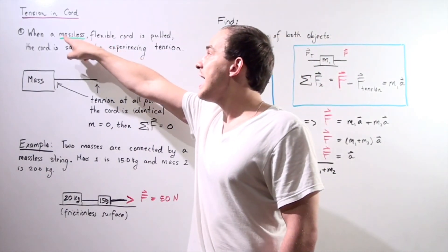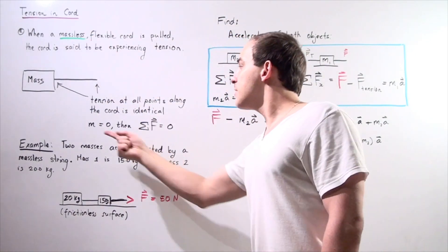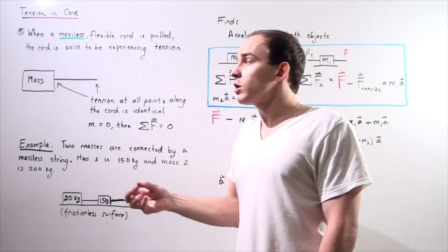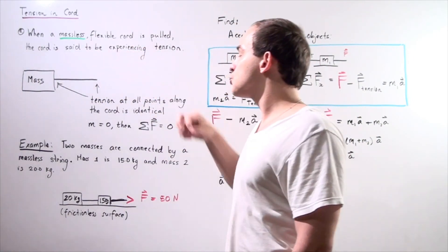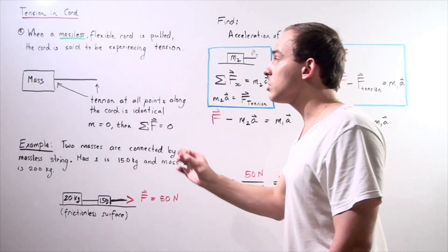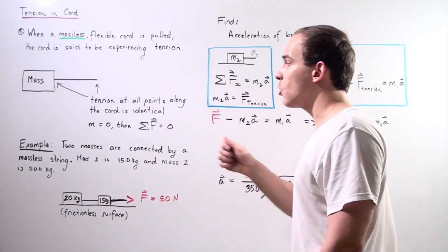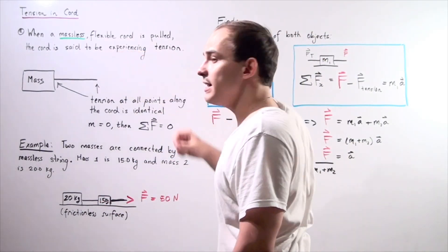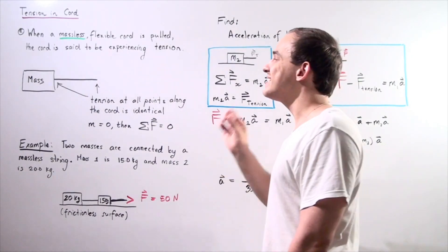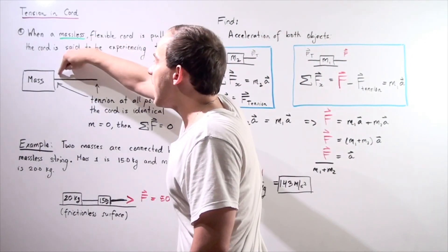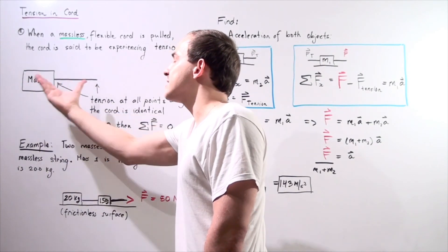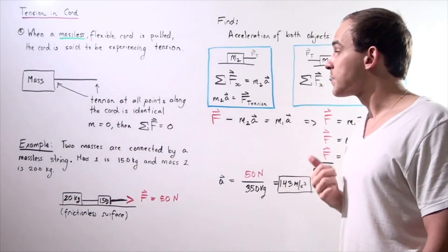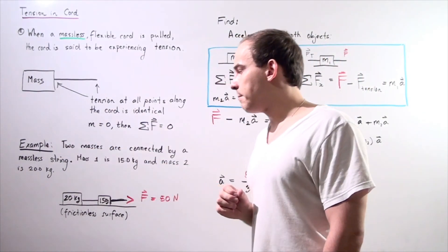That's because if we have negligible mass, if the mass equals zero, then our change in the force throughout the entire string will be zero. Our force will remain undiminished. Whatever force I pull with on this string at the beginning, that force will be exactly the same at the end of the string. So my mass will experience the same exact force, the same exact pulling force. Let's look at an example.